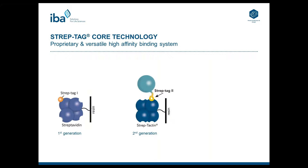To further improve the binding affinity, Streptavidin was mutated and then named Streptactin. The so-called second generation Streptag system has been used for more than two decades in protein purification.